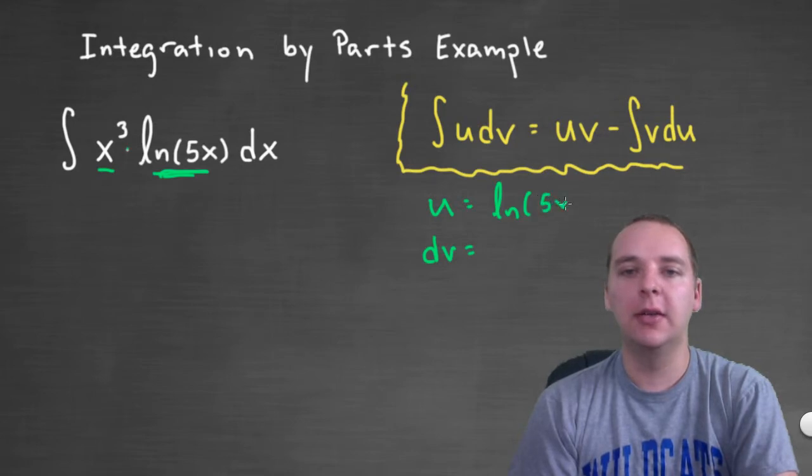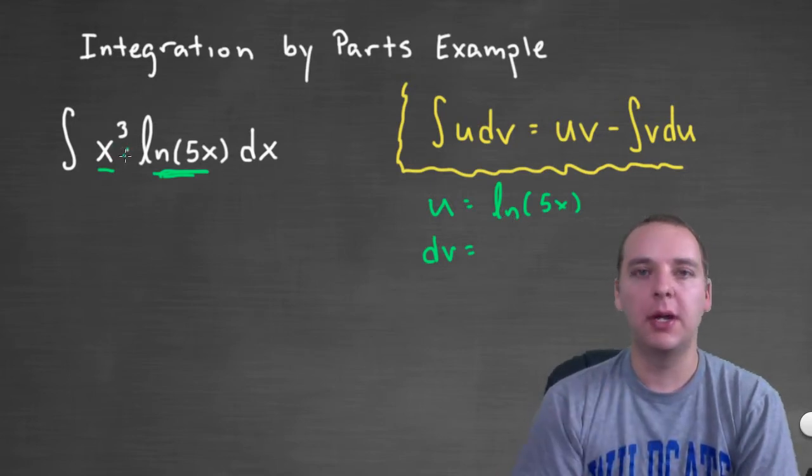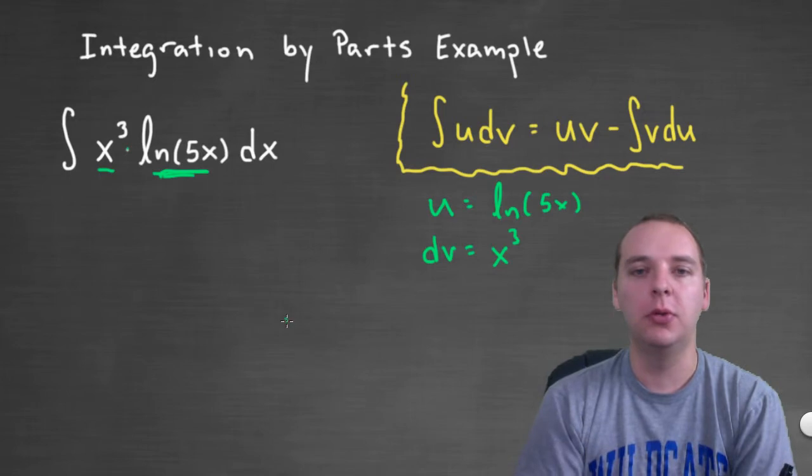So natural log of 5x has to be the u because I can take its derivative quite easily, but not its integral. And then, just process of elimination, the x cubed is forced to be the dv unfortunately. But we do what we have to do.